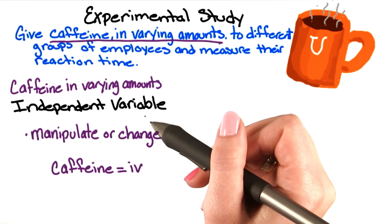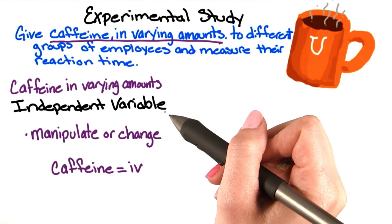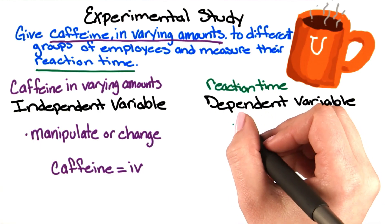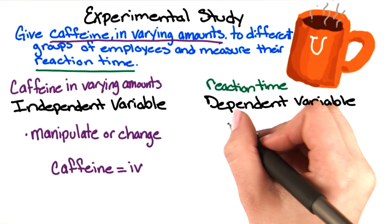We measure the effect of our independent variable on the dependent variable. The dependent variable in our experiment is reaction time, because the dependent variable is what we measure.